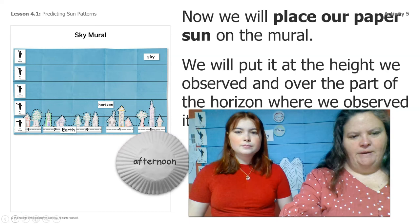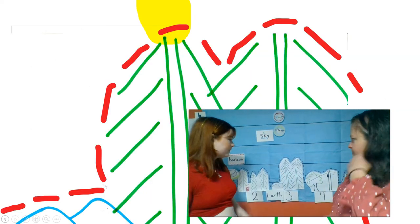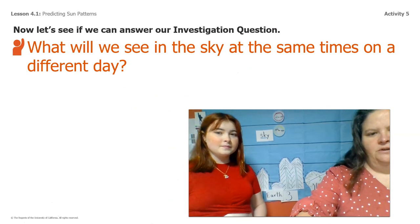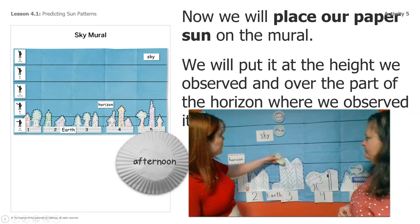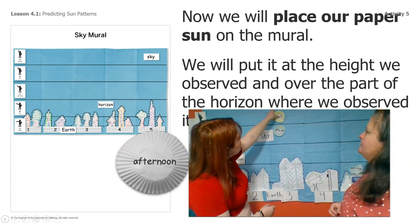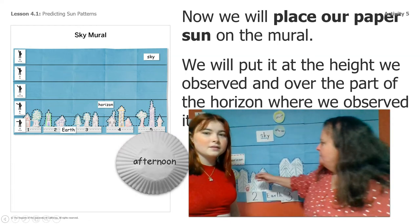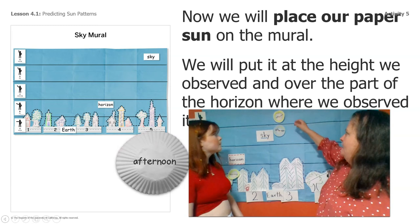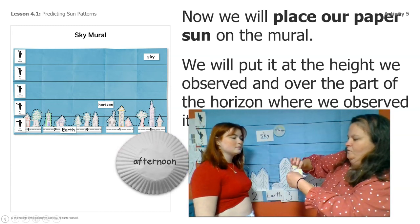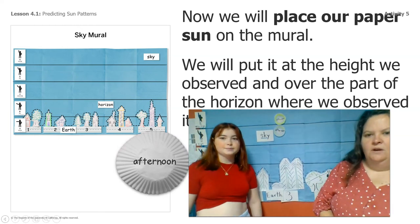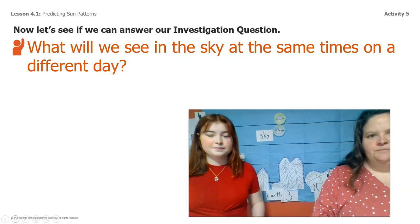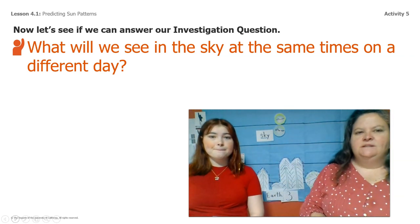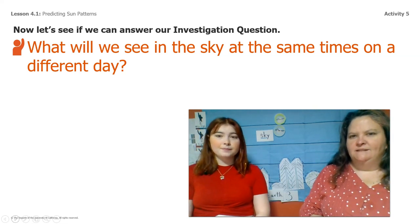Now we need to put it on the sky mural. We said it was very high, and we looked back at the picture — the two tall trees. Rosie placed the sun on the mural right where her prediction was. We removed the predictions and now we have two data points: morning and afternoon. Does this help us answer the question: what will we see in the sky at the same time on a different day?